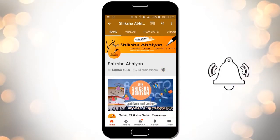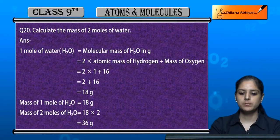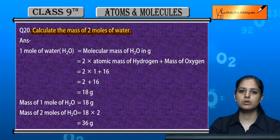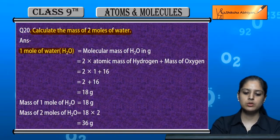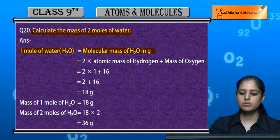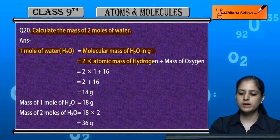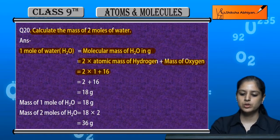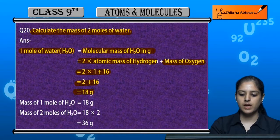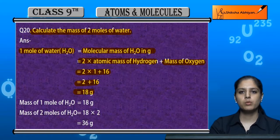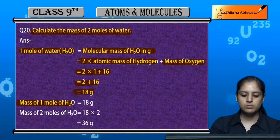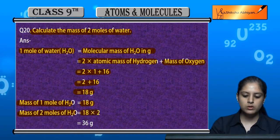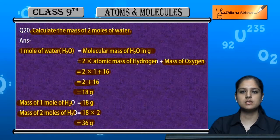Question 20: Calculate the mass of two moles of water. The molar mass of one mole of water is calculated as 2 multiplied by hydrogen plus oxygen, that is 2 into 1 plus 16, which equals 18 grams per mole. So for 2 moles: 18 multiplied by 2 equals 36 grams.